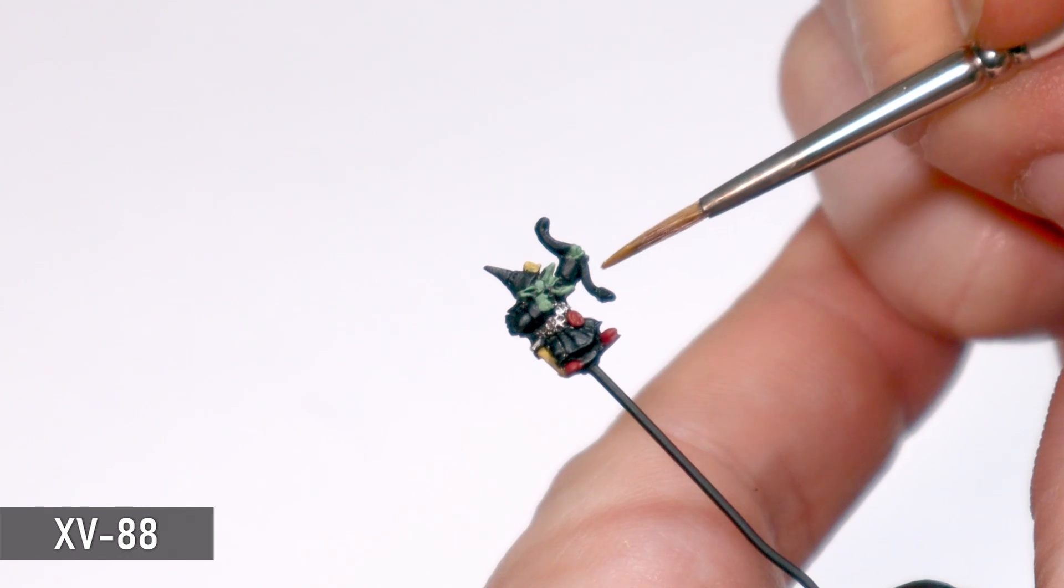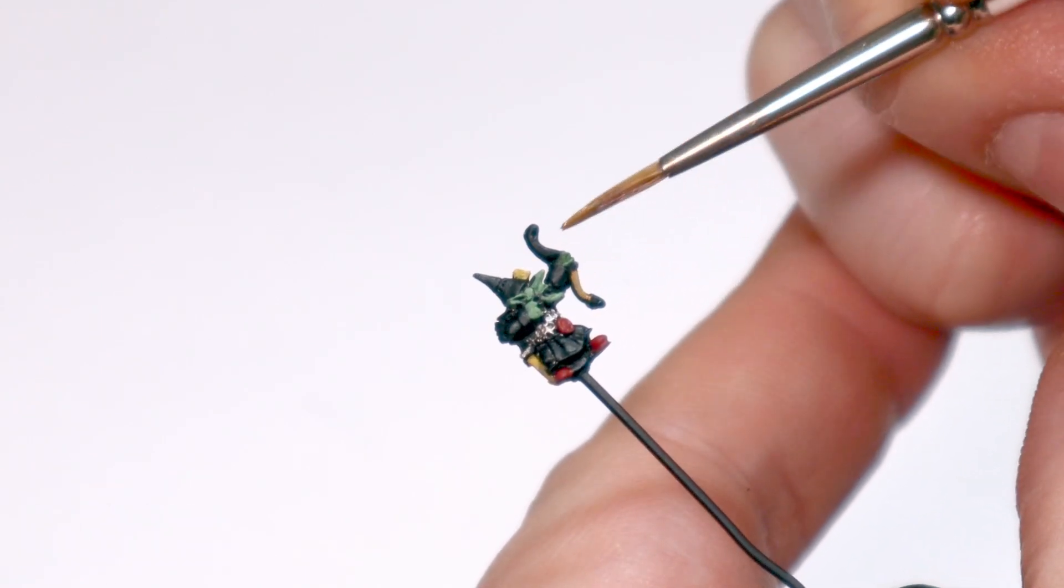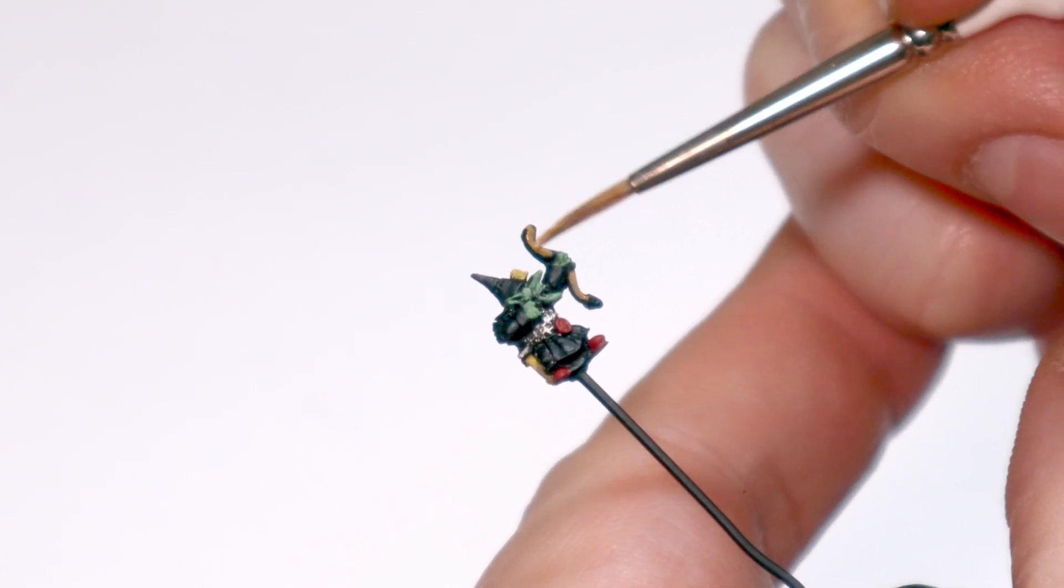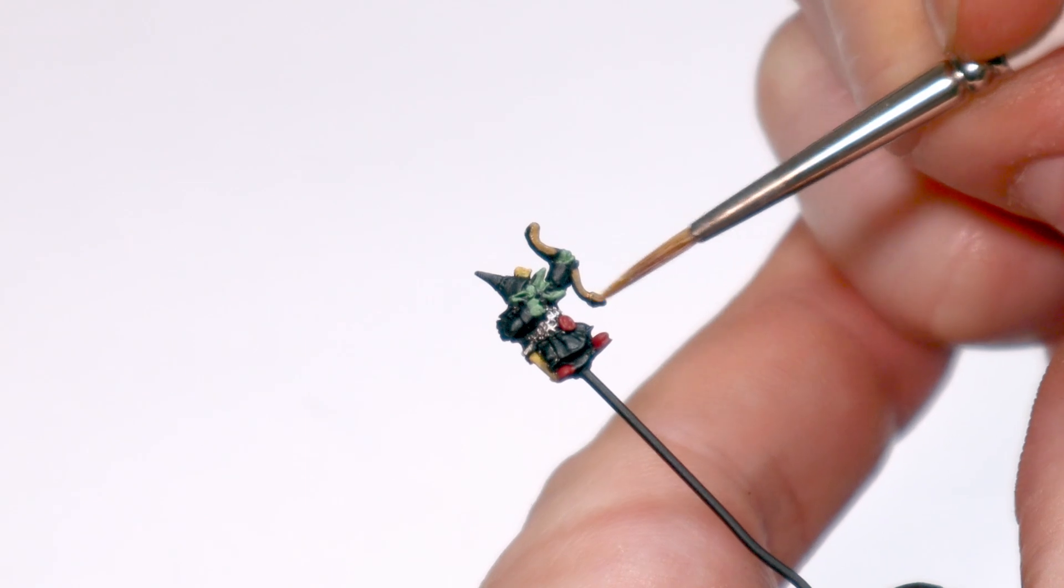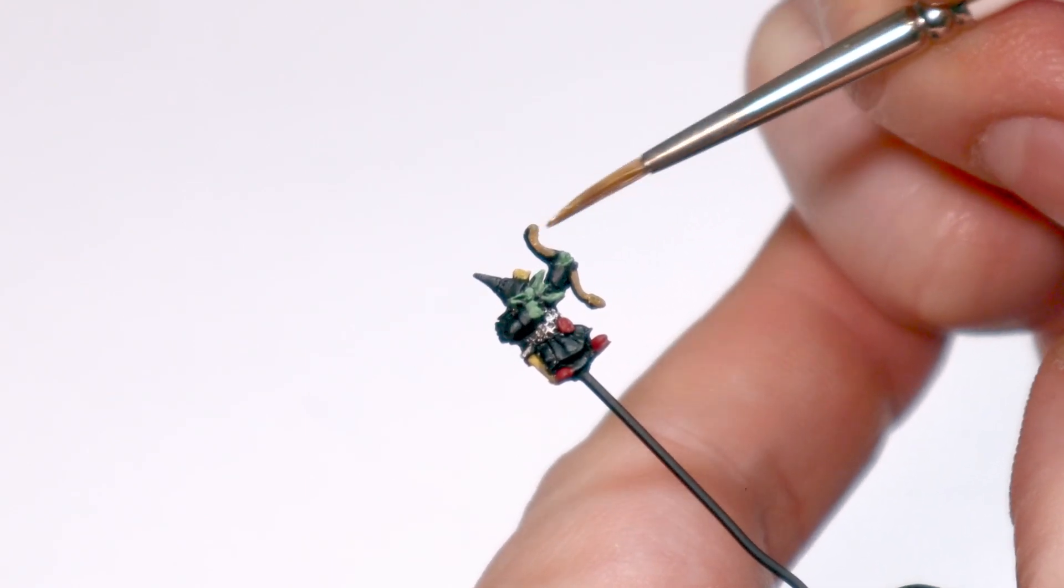I'm putting down XV88 on his bow just to give it a nice mid-brown. Generally when I paint bows I use something like Rhinox Hide so it's not too distracting with the other colors, but it's kind of the opposite with this guy at this scale, and I want that bow to be a bit more readable.